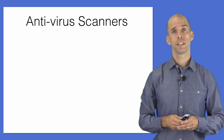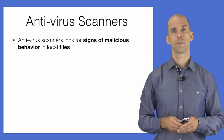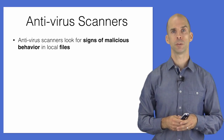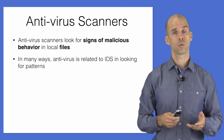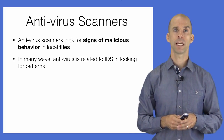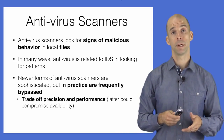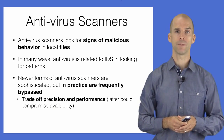Antivirus scanners examine the contents of files, emails, and other traffic on a host machine, looking for signs of attack. These are quite similar to IDSs, but operate on files with less stringent performance requirements. However, they too can often be bypassed by making small changes to attack vectors.